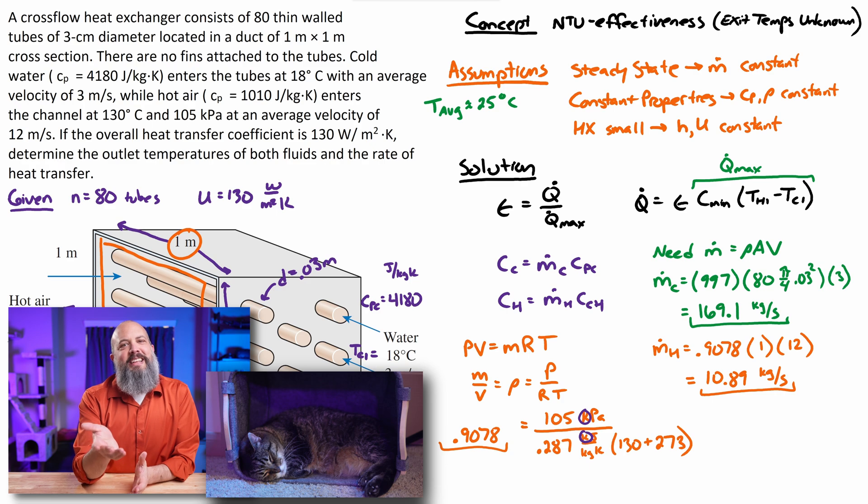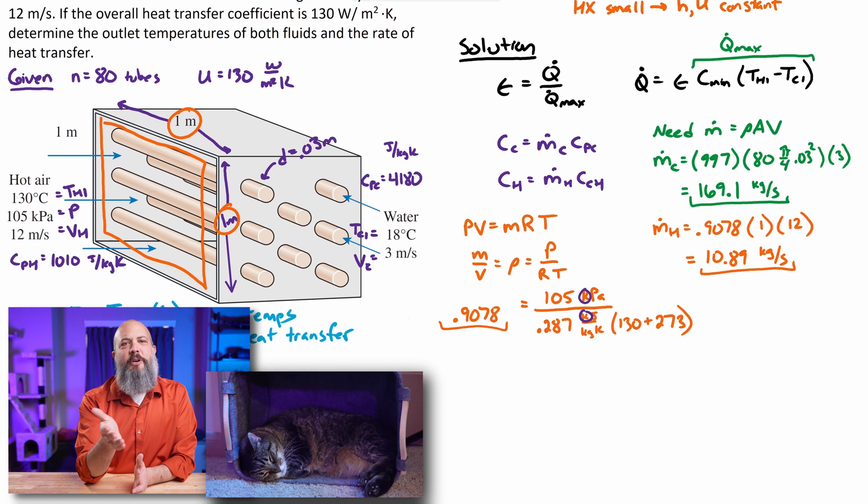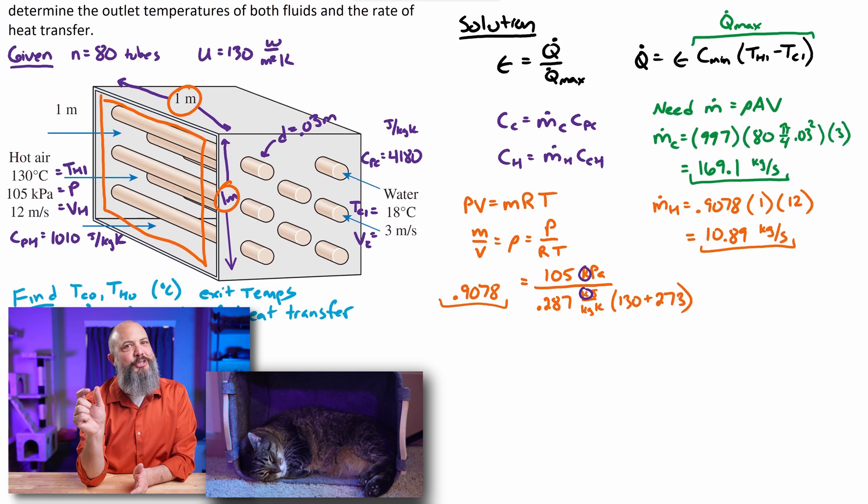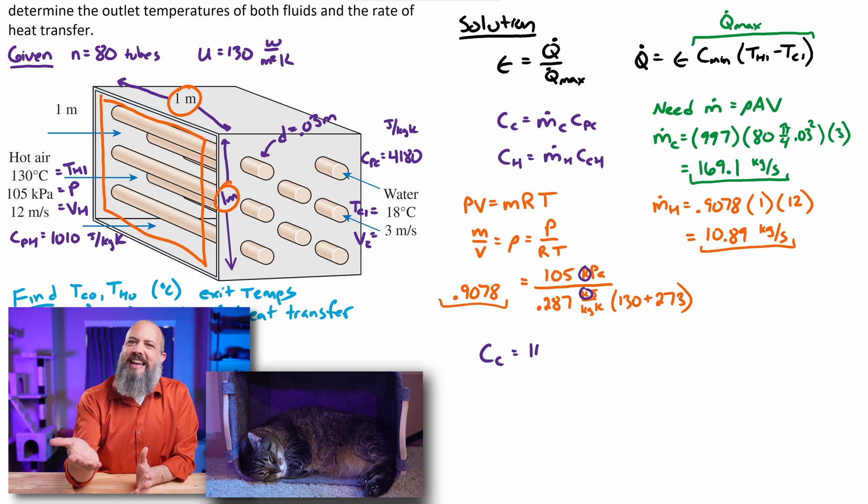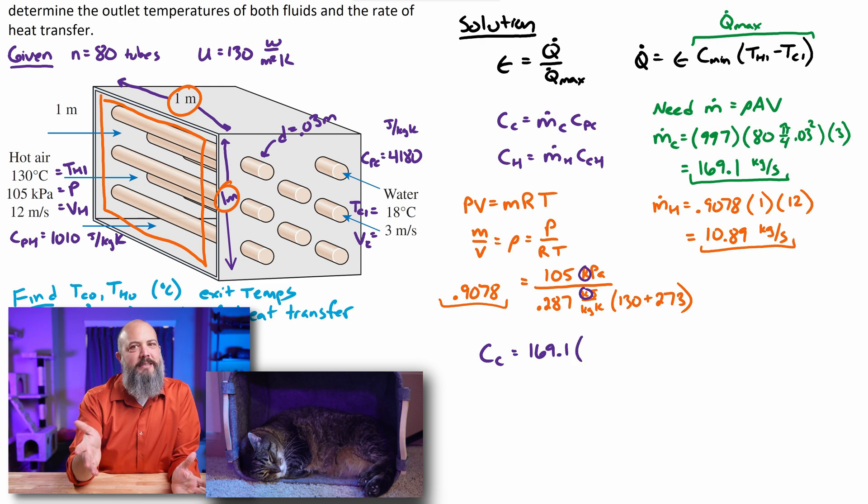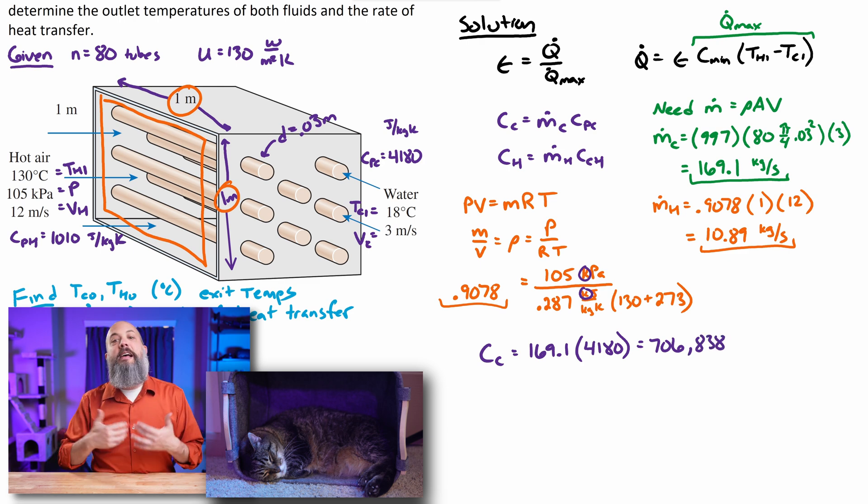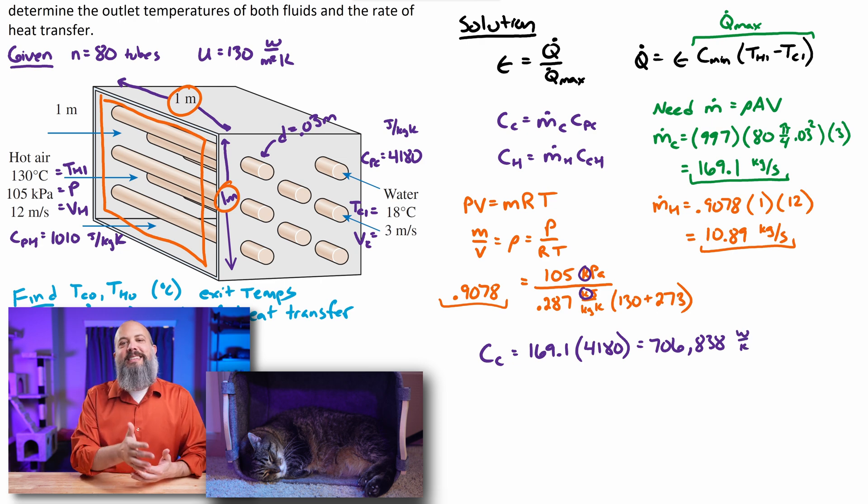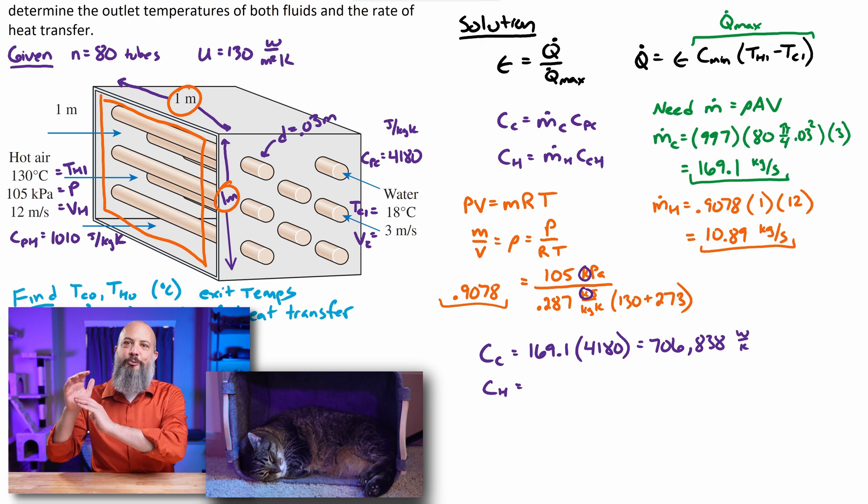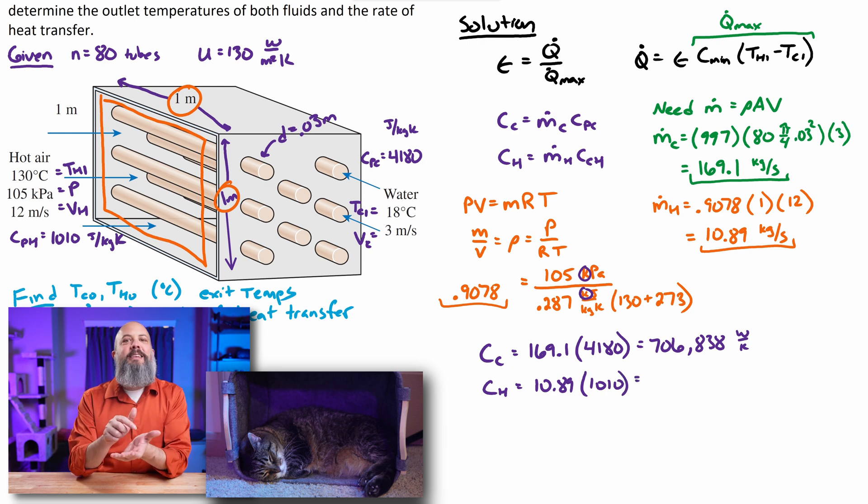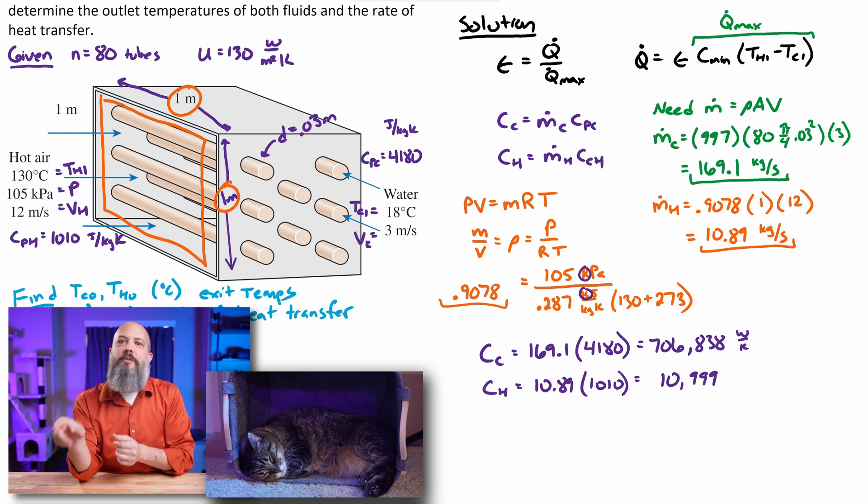And so I was a little inconsistent in that I assumed that the water was going to change temperature when I used its density. But for the air, I assumed that it's not going to change temperature. I just used the 130. I didn't use like 125 or 120. So again, we'll check at the end as to see whether that was actually a good assumption or not. But I now have enough information to calculate the heat capacity rate. This is the capital C, the m dot cp. So for the cold flow, 169 times 4180. For the hot flow, 10.89 times 1010. I get a heat capacity rate of 706,000 for cold and about 11,000 for hot.